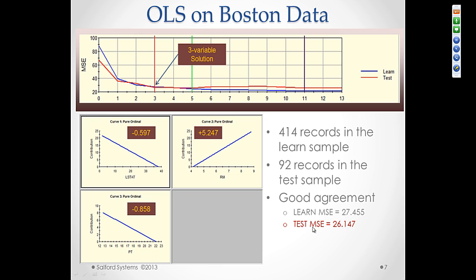At the same time, test sample performance in the beginning improves, but then it kind of stays the same and even worsens a little bit, which is why, based on the test performance, we just picked a three variable solution as an example solution that conventional OLS regression leads us into. Now the nice thing about this solution is that it has pretty much good agreement between learned sample mean squared error and test sample mean squared error. And I want you to keep an eye on the test sample. Just remember this number, 26.147, which basically means that on average our regression model makes an error of about $5,000 in predicting house values. Now an interesting thing about Boston housing data set is because it goes back to the 1970s, back in those days you could buy a home on average for $22,000.